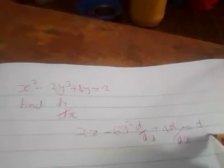Plus 4 dy over dx is equal to... the derivative of the constant 2, but this one is equal to 0.